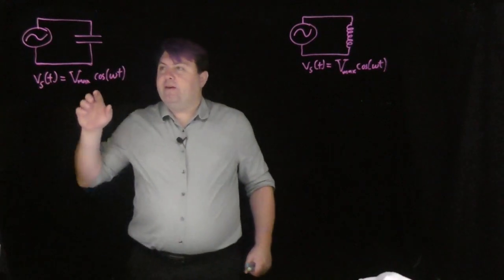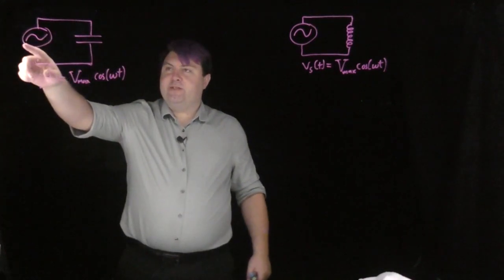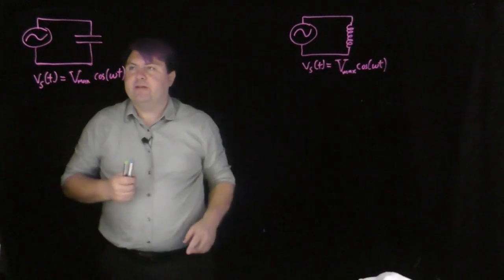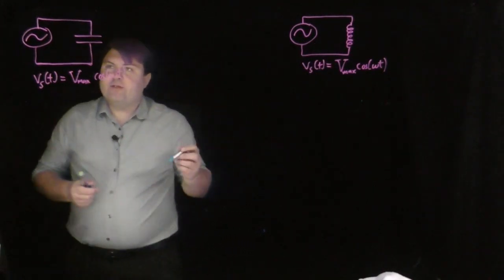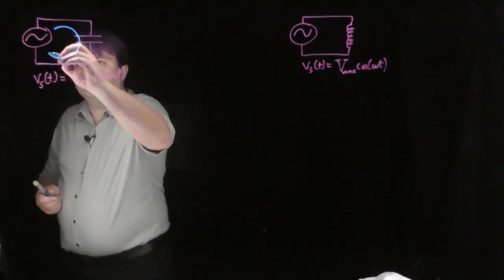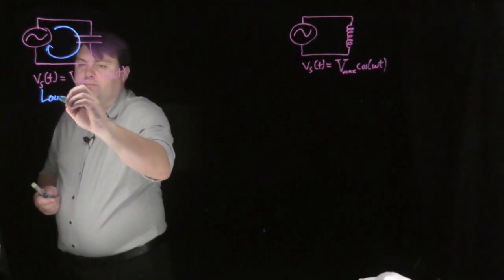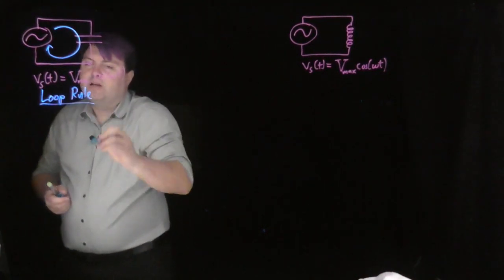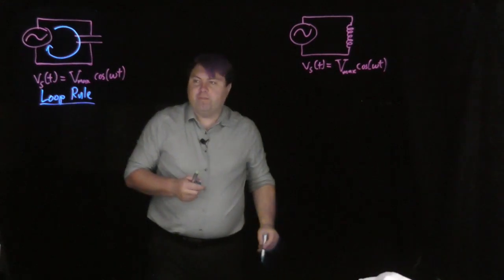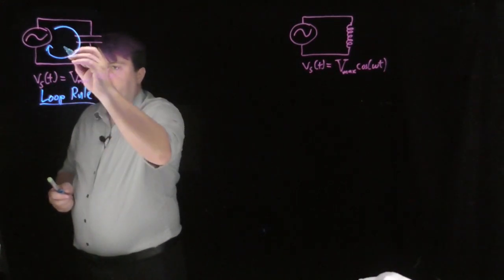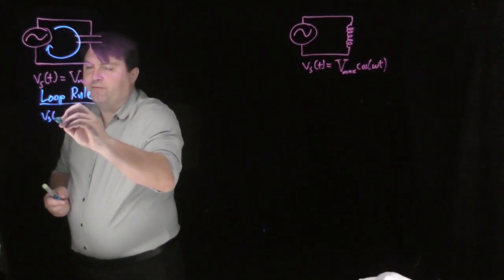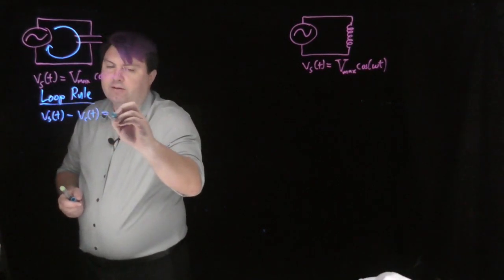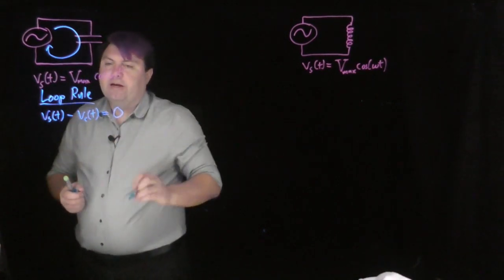Welcome. We have here an AC source connected to a capacitor, and we're also going to look at an AC source connected to an inductor. The first thing we want to do is use Kirchhoff's loop rule. From this loop rule, the first thing we can do is look at the voltage of the source minus the voltage of the capacitor, which has to equal zero.